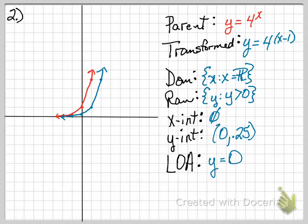No x-intercept. You can see when we shifted everything over one unit to the right, our y-intercept became 0 and 1 quarter, or 0.25. And the line of asymptote is y equals 0.